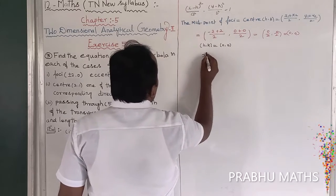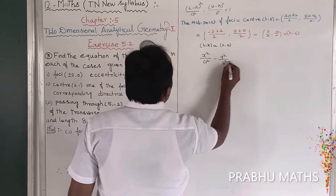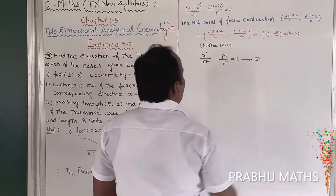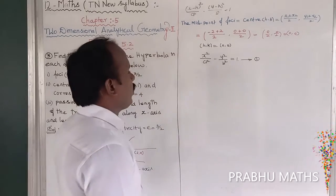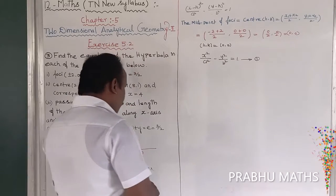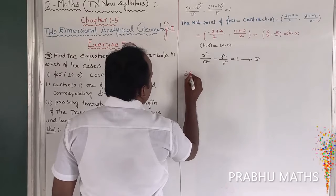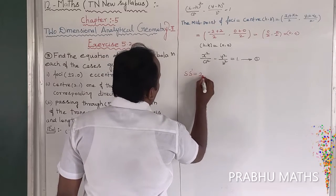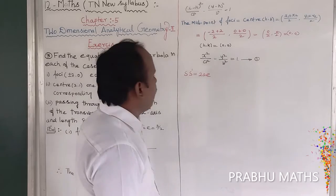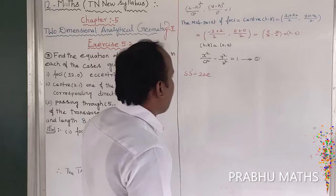Since the center is (0, 0), the equation simplifies to x² / a² − y² / b² = 1. That is equation number 1. Next, find the value of a. The distance between the foci S and S' is equal to 2ae. S is (2, 0) and S' is (−2, 0).